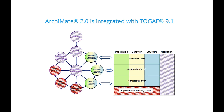We also have in Archimate 2 two extensions: a motivation extension, which captures the information in the TOGAF preliminary phase, phase A architecture vision, requirements, and phase H architecture change management. Also in Archimate we have an implementation and migration extension, which captures phase E opportunities and solutions, phase F migration planning, and phase G implementation and governance. So we've got all of the things in Archimate that we had in the TOGAF architecture development method — but we've got more.